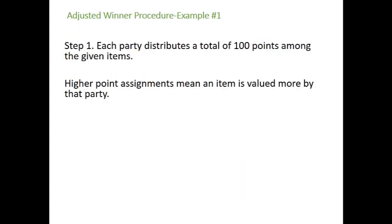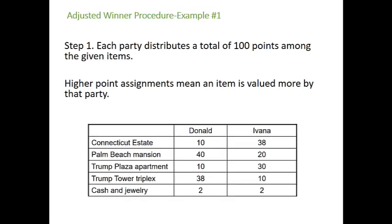The first step of the procedure is that each of the two parties distributes a total of 100 points among the given items. Higher point assignments mean that an item is valued more by that party. Donald and Ivana each go into separate rooms, divide their 100 points however they like among the items in question, and give more points to the items they want more.